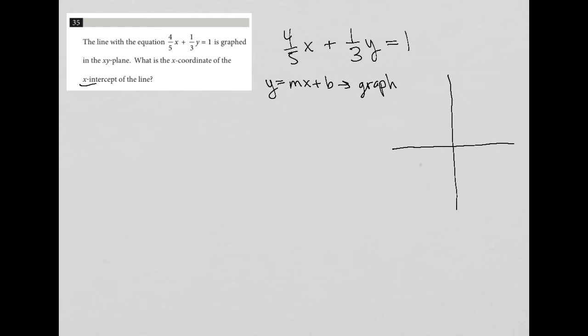The question is asking for the x-intercept. The x-intercept is the x value when y equals 0, which is basically going to be some x value comma 0 for the ordered pair.